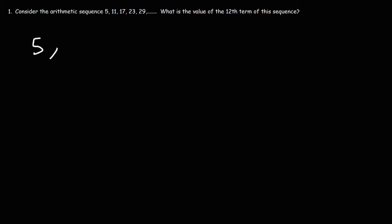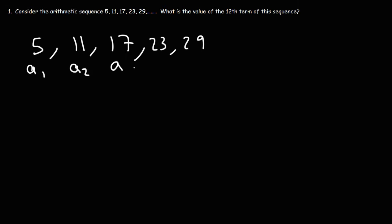So let's rewrite the sequence first. a sub 1 is the first term, a sub 2 is the second term, a sub 3 is the third term, and so forth. Now, notice that the numbers are increasing by 6. If we add 6 to 11, it will give us the next term of the sequence, which is 17. So this is the common difference d. We need that in order to find the value of the 12th term.